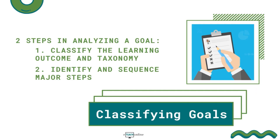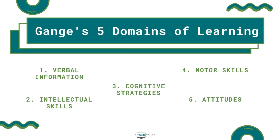There are two steps in analyzing a goal. Number one, classifying the goal according to learning outcomes and taxonomy. And number two, identifying and sequencing the major steps involved in performing the goal.